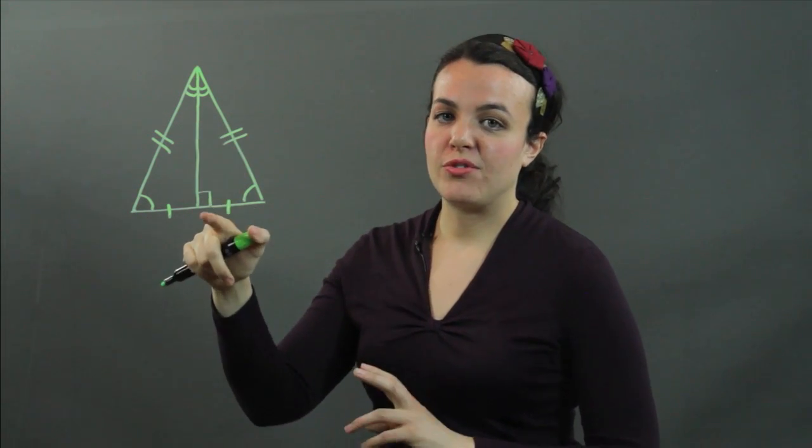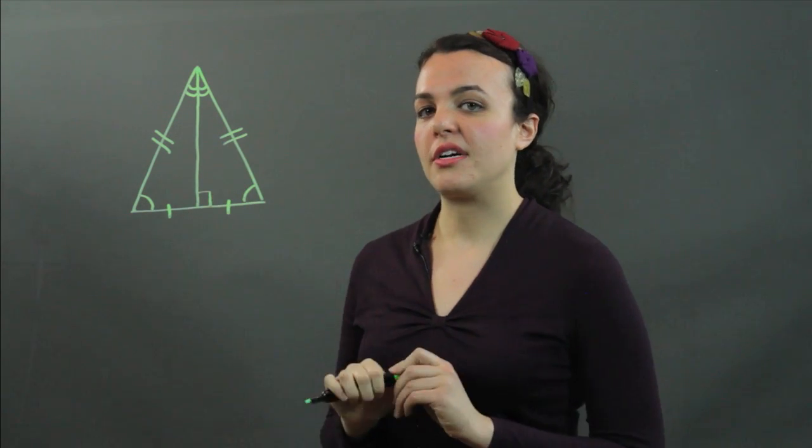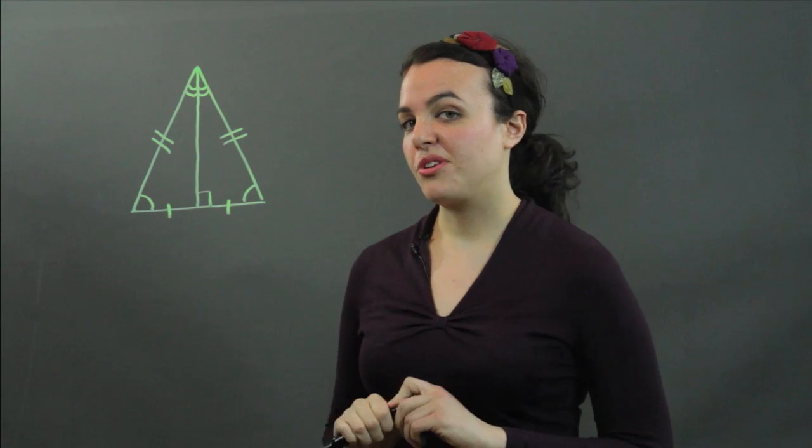This line segment that we've drawn, the line segment that bisects, is also the altitude of your isosceles triangle, if that's something you're also looking for.